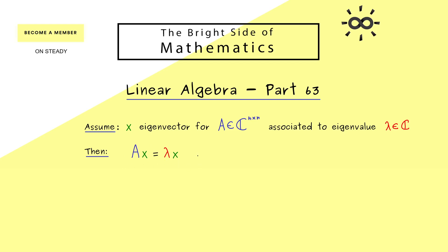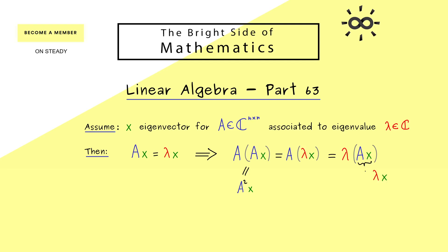We have the important eigenvalue equation Ax = λx, so the matrix operation for eigenvectors is very simple because it's only scaling. Now it's no problem at all to multiply both sides with the matrix A again from the left, giving A²x on the left and λ·Ax on the right. Using Ax = λx again, we conclude that x is also an eigenvector for A², with associated eigenvalue λ².